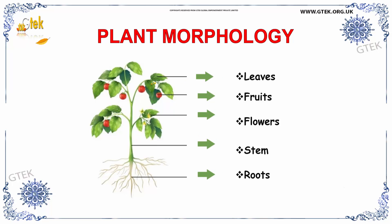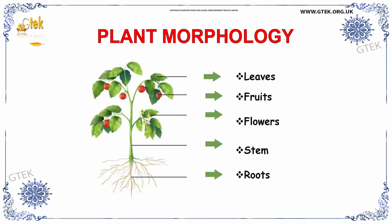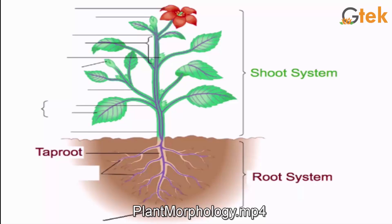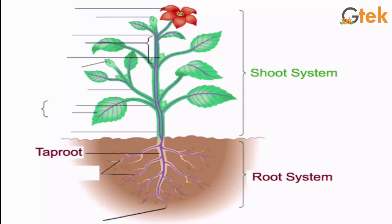In plant morphology, the plant consists of leaves, fruits, flowers, stem and roots. You can see it over here. In plant morphology, we are going to see the shoot system and root system, and the type of root is the tap root.